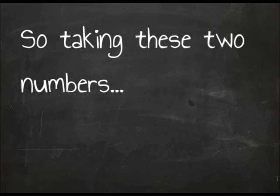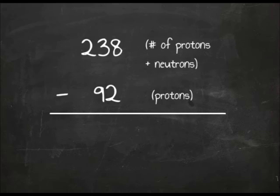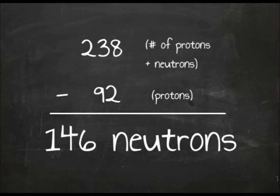So, by taking these two numbers, 238 minus 92, we find that there are 146 neutrons present in an atom of uranium-238.